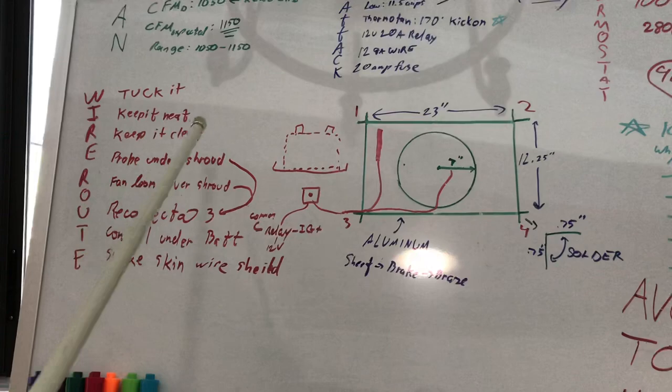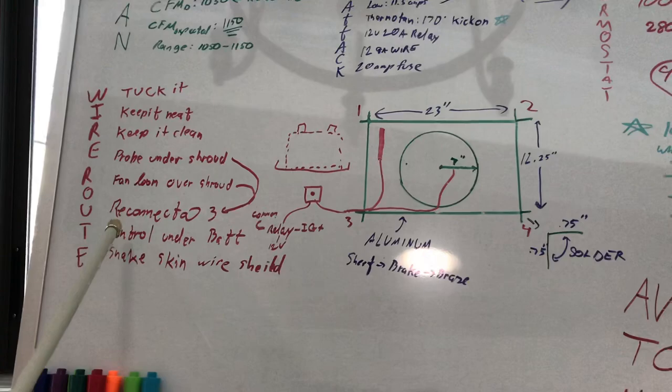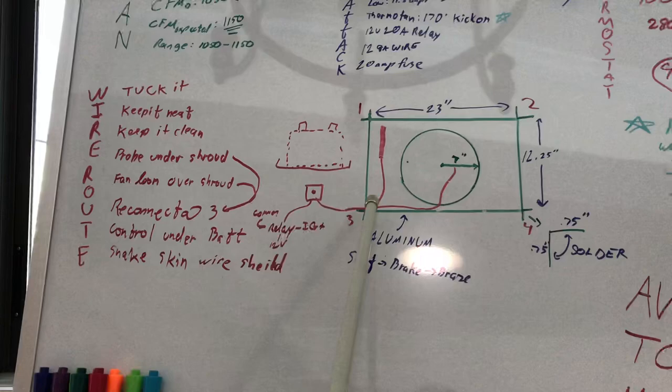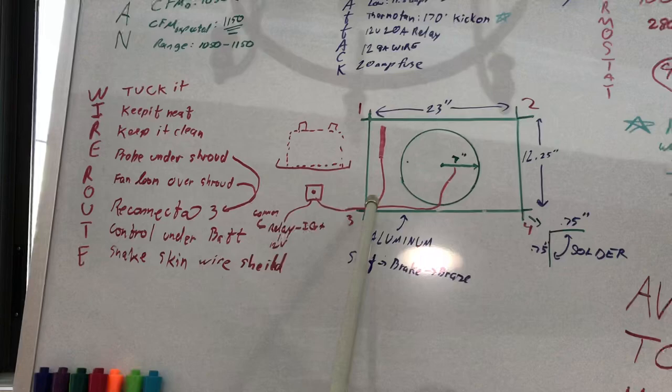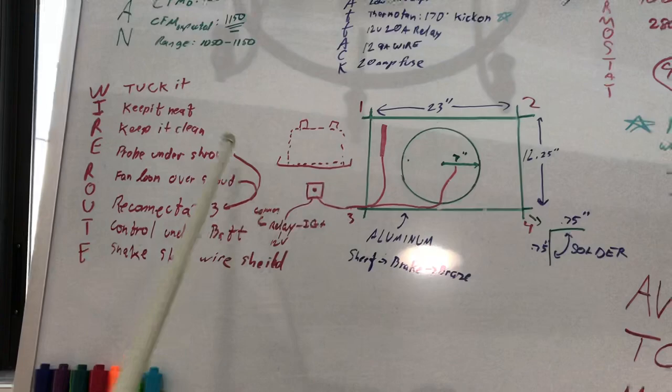Here's what I do: tuck it, keep it neat, keep it clean. Probe under the shroud that way nobody can see it. The fan loom over the shroud so you don't want the little wire going into the fan obviously. Reconnect at three, so this is where three is for me, and that way it all looks nice and neat. Have it tucked that way you don't see wiring all over the place. Controller under the battery, that's the controller.